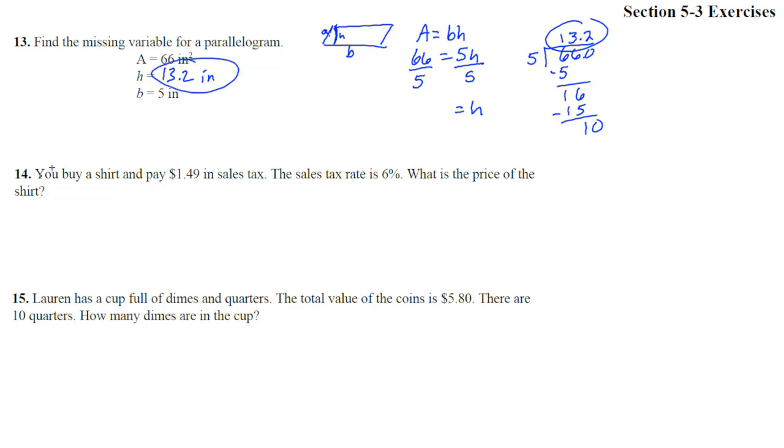Number 14. You buy a shirt and pay $1.49 in sales tax. So that is our tax right there, $1.49. The sales tax rate, that's R, is 6%. That's 0.06 as a number. What is the price? We're looking for price. And the formula in the book was tax equals the rate times the price. Yeah, 6% of the price equals $1.49.